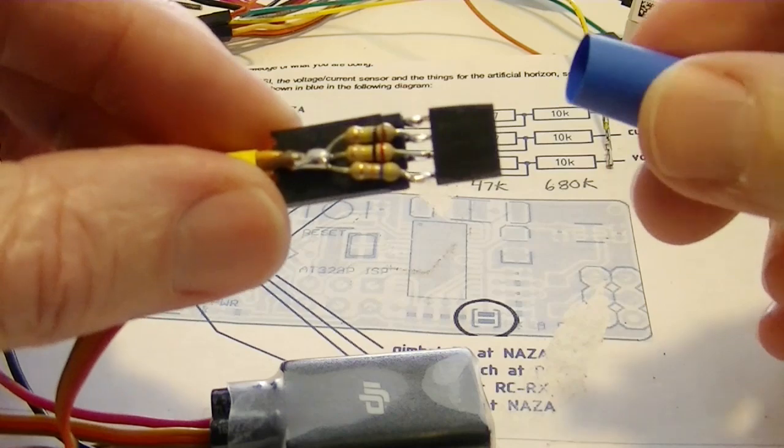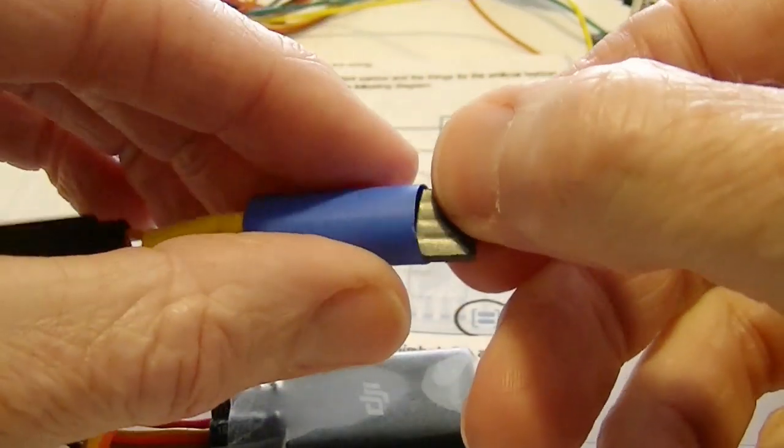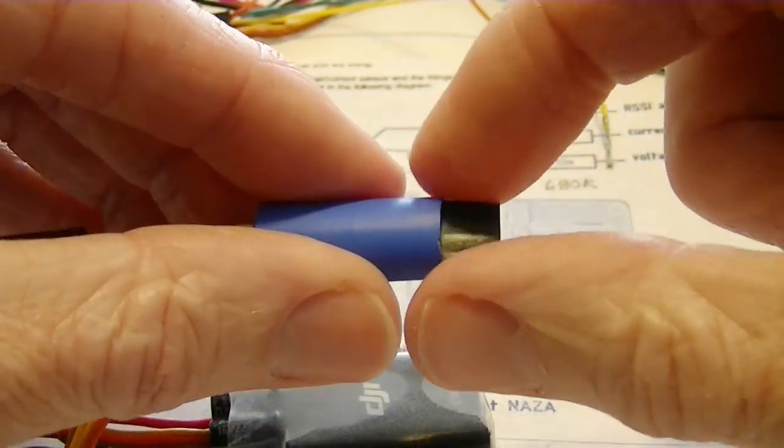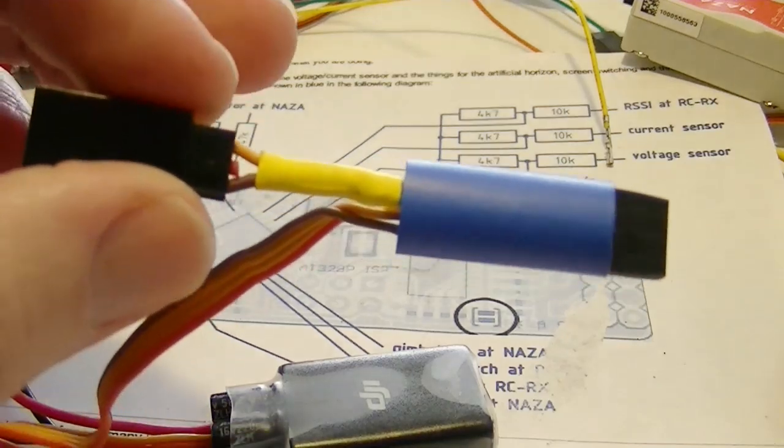To finish it off I'm just going to take a piece of heat shrink and stick it over like this, leave enough sticking out so it'll plug into the NAZA and then heat shrink that down. So that's my version.